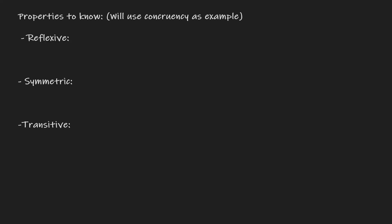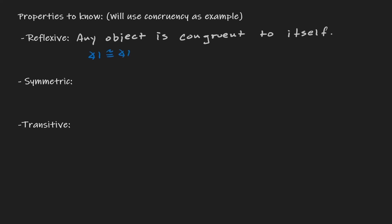The reflexive property pretty much says that anything is congruent to itself. So any object is congruent to itself. A basic example: if I'm giving you an angle, that angle is congruent to itself — we're using the reflexive property. Angle one is congruent to itself; angle two is congruent to itself. Anything is congruent to itself. It can be angles, it can be line segments — AB is congruent to AB, and so forth.